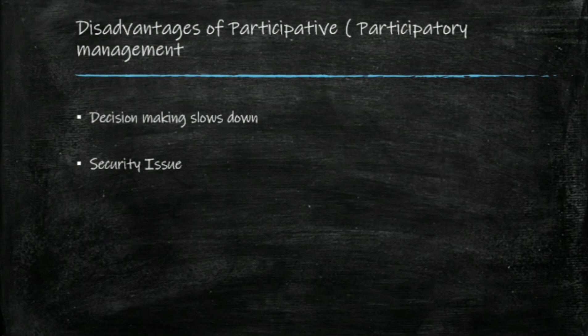In level 3, employees get involved in providing inputs, so there will be more options and decisions, and therefore more time to select among them. In level 4, employees are fully empowered, so the decision making process takes the most time.